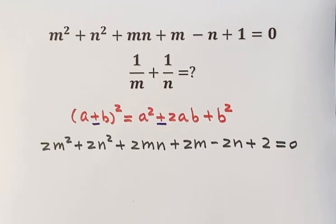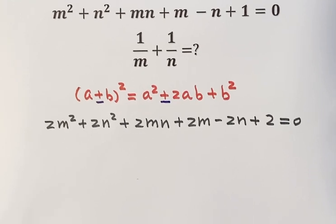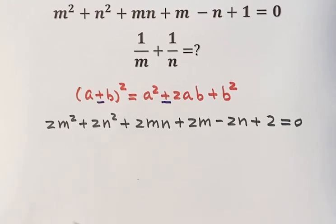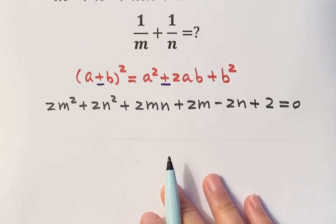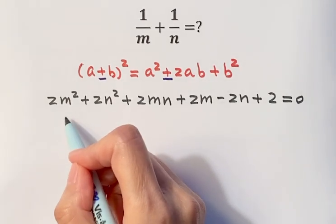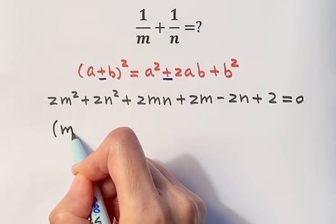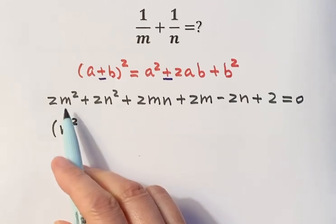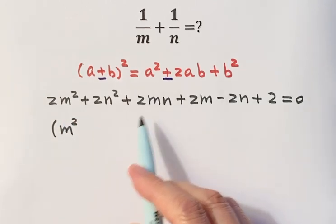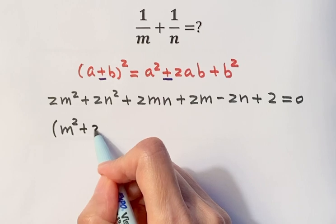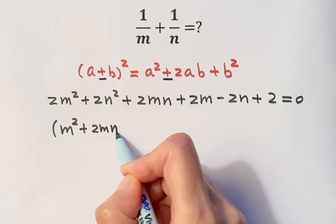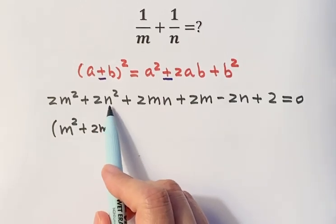So then I'm going to try to make a complete square. So first, take 1m squared, put it here. 1m squared, put it here, then write 2mn. So take 1n squared, put it here.